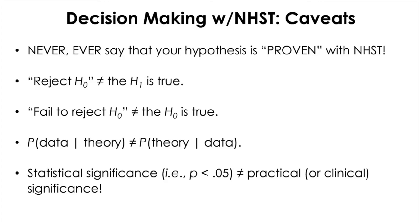Secondly, absence of evidence is not the same as the evidence of absence. The probability that you will observe a certain data set given the theory is true — P(data | theory) — is not the same as the probability that the theory is true given a certain data set — P(theory | data). You cannot flip them back and forth to mean the same thing; they are not necessarily the same. You always have to remember that the absence of evidence is not the same as the evidence of absence.